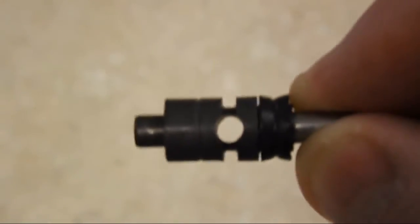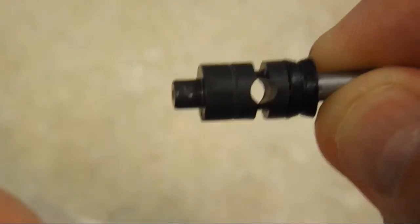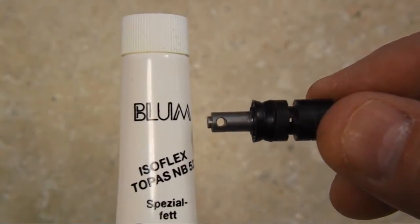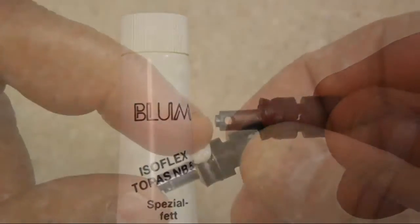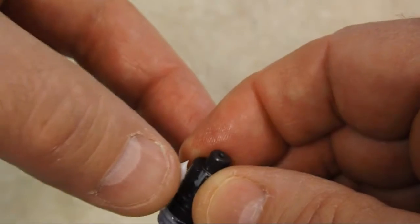Now clean the piston with a lens tissue or cleaning solvent. Once clean, apply a small bead of Bloom's Isoflex Grease to the piston seal and vertical slot so it seals and glides freely when replaced.